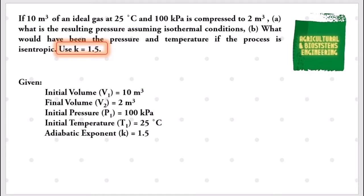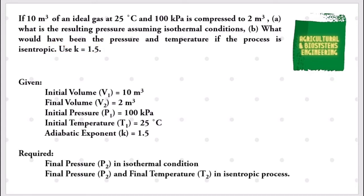What is required in the problem is the final pressure P2 in isothermal condition, and the final pressure P2 and final temperature T2 in isentropic process. After identifying the given and the required in the problem, let us proceed to our solution.